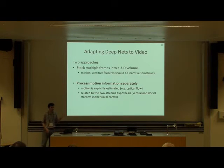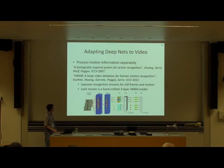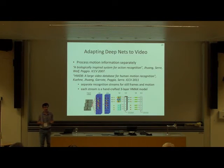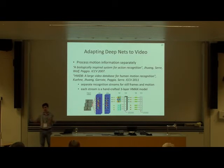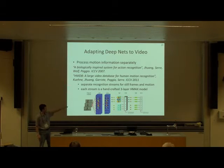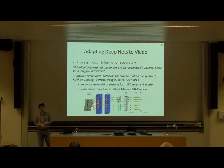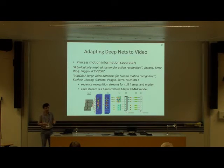The second pathway is a group of methods which process spatial information and temporal information in separate streams. One of these methods is based on an HMAX-style model, which has two layers where each layer performs template matching followed by a pooling operation. It's related to convolutional networks but trained layer by layer. The results of this HMAX architecture are not particularly impressive, possibly because the network is quite shallow and handcrafted, so there is no end-to-end learning.